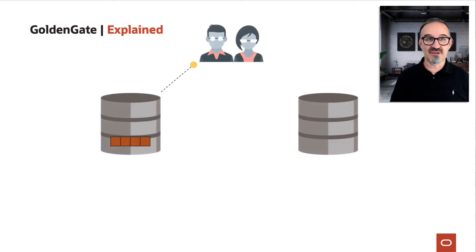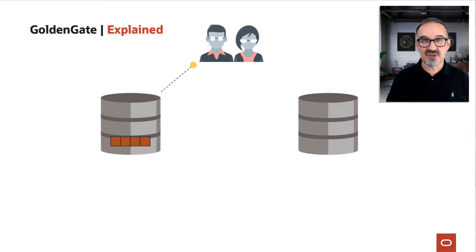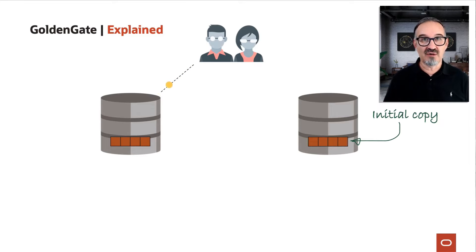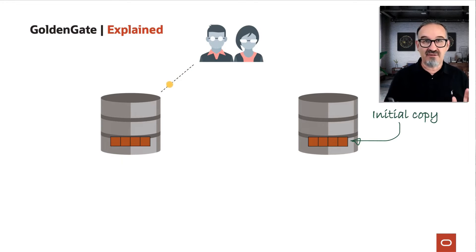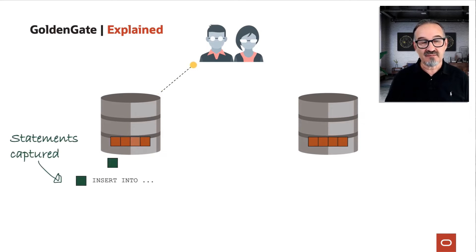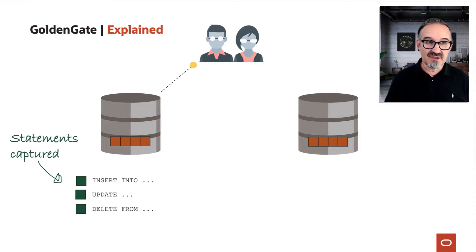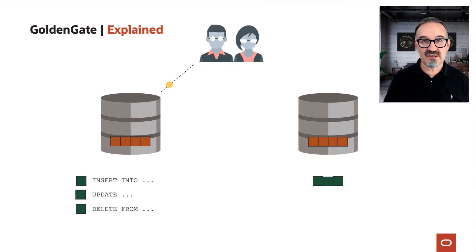This is how GoldenGate works. You're connected to a source database, and applications and users work there. First, we need an initial copy of our source database — this can go cross-platform, cross-version, non-PDB to PDB, everything is possible, true flexibility. Then we start GoldenGate and begin capturing statements: inserts, updates, deletes — which are captured and written into so-called trail files.